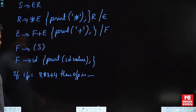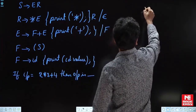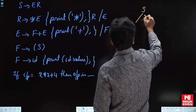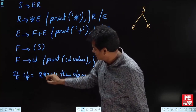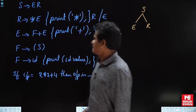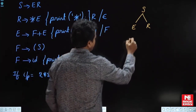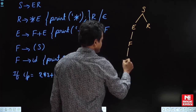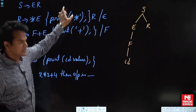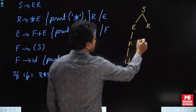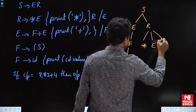So consider the parse tree for id into id plus id. Go for S, then E, then R. Initially we want multiplication then addition. In E place, go for F, then F place id. R is star E R, so R is star E R.